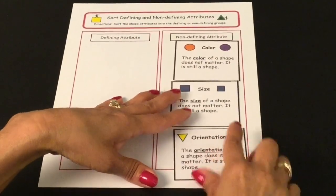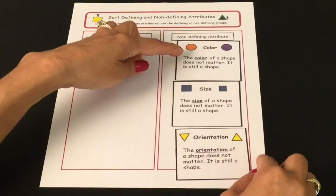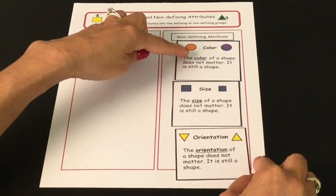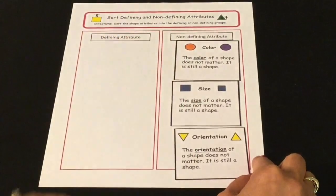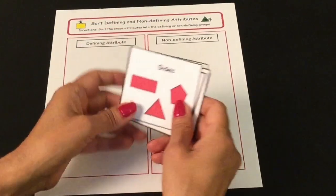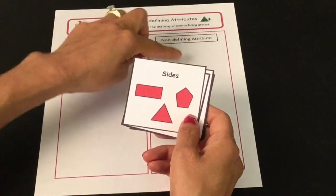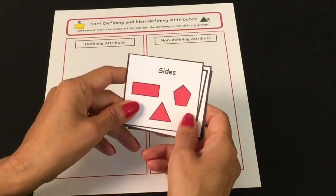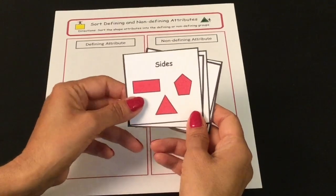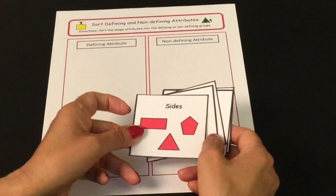So non-defining attributes are attributes that don't matter, and the three non-defining attributes of a shape are color, size, and orientation. Now I'm going to check for understanding. I want to see if you can tell me whether something is a defining or a non-defining attribute. So — the number of sides: is that a defining or a non-defining attribute?